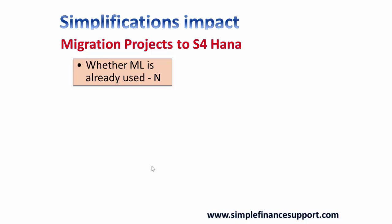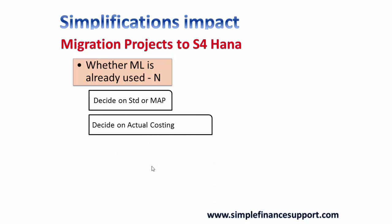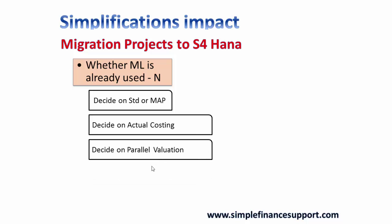Both material ledger and non-material ledger scenarios are changing technically and process-wise as they come into SAP S/4 HANA. From the migration project point of view, you have to decide whether you are still going to use standard cost or moving average price, whether you are going to use actual costing or not — since actual costing is optional. You also have to decide on parallel valuation — whether you are going to use profit center valuation or group valuation — which is different from currency valuations.